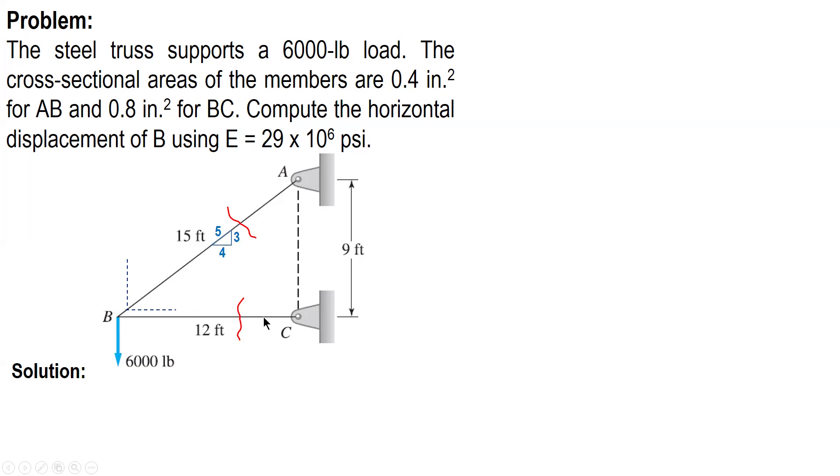3, 4, 5. Now, let's solve this one in a practical way. To maintain equilibrium, this 6,000 pound force must be resisted by an upward force, 6,000, and total vertical force equal to 0.